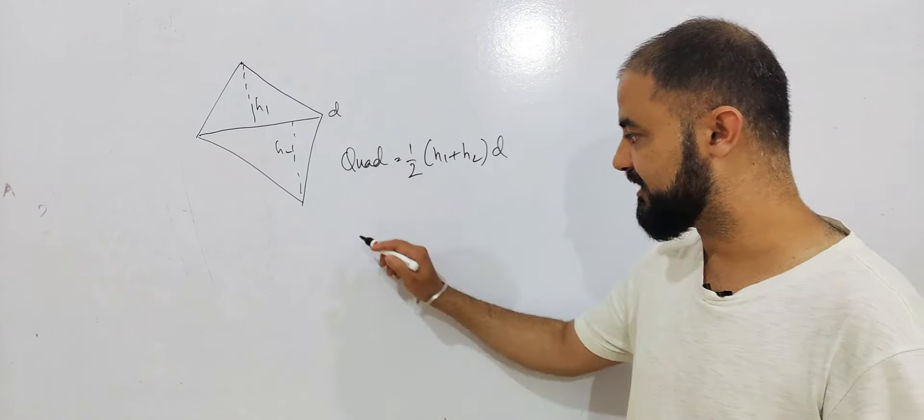Now, an easy way to remember that. Do you remember the area of a right-angle triangle? Half base B into height H, half BH.